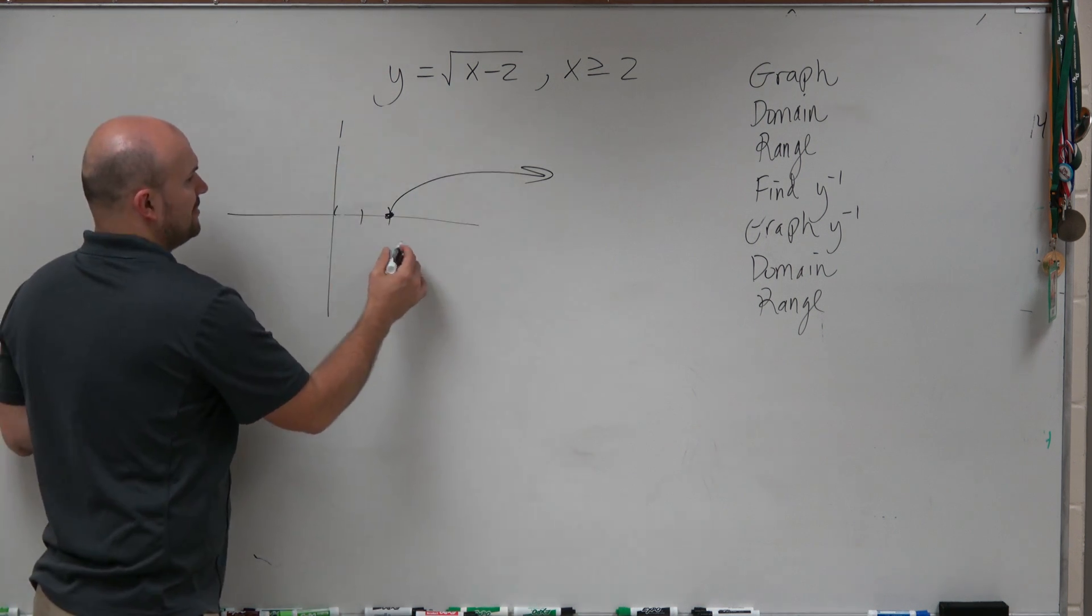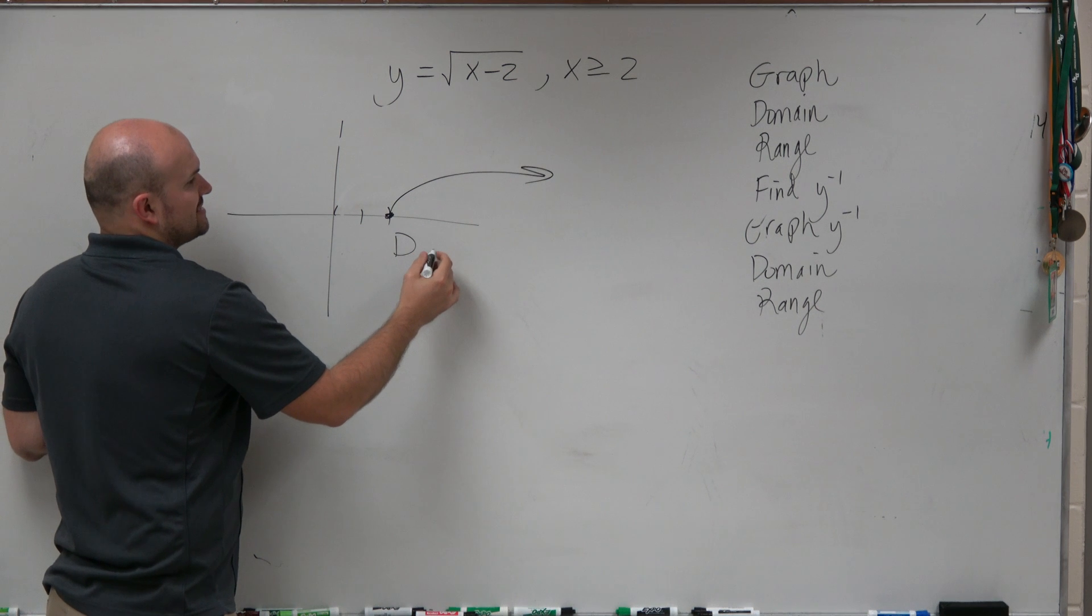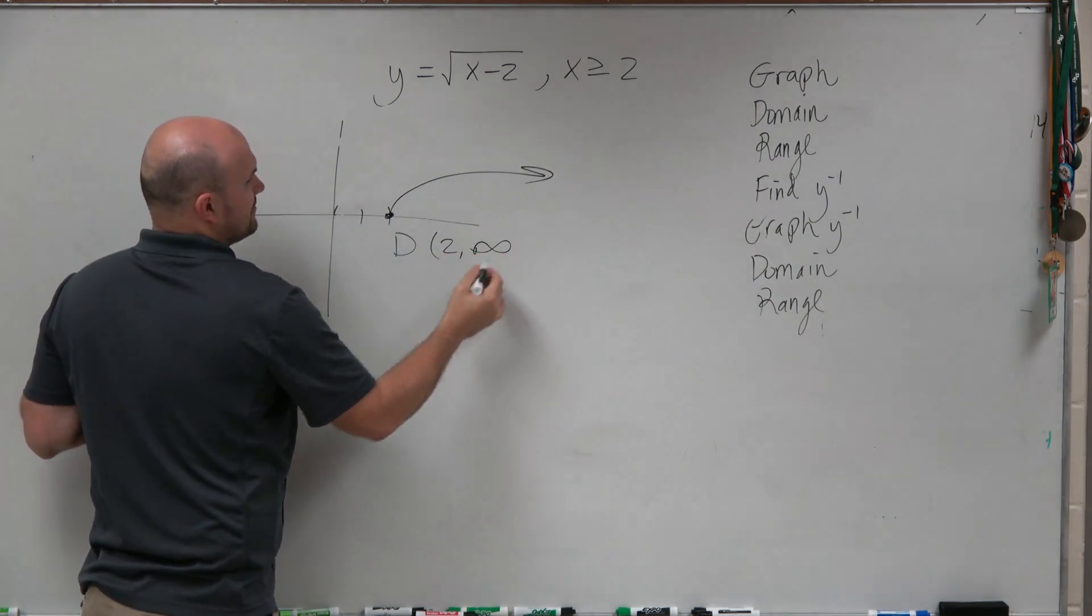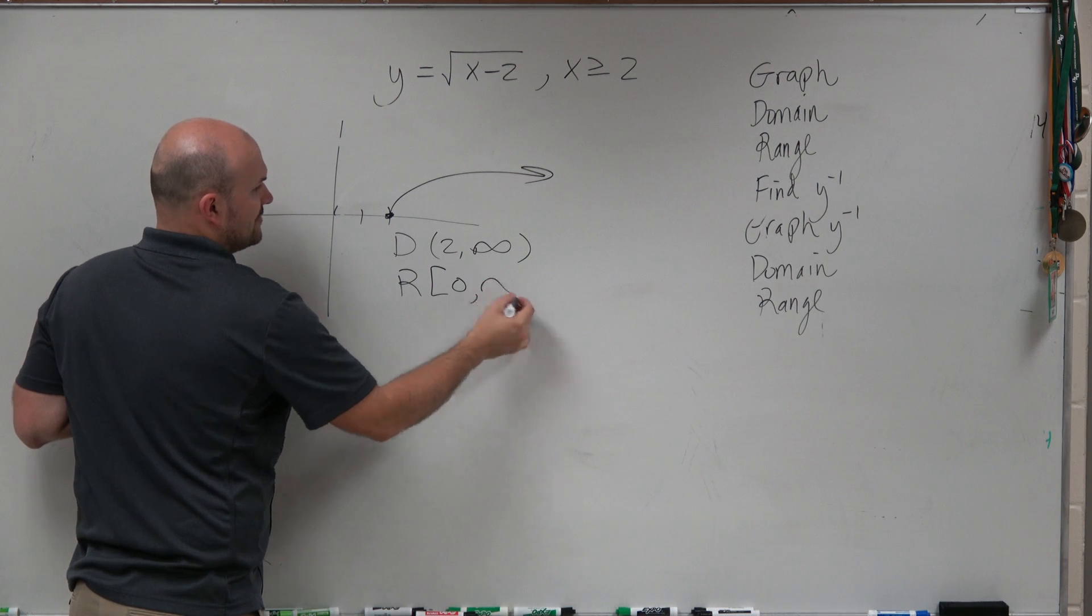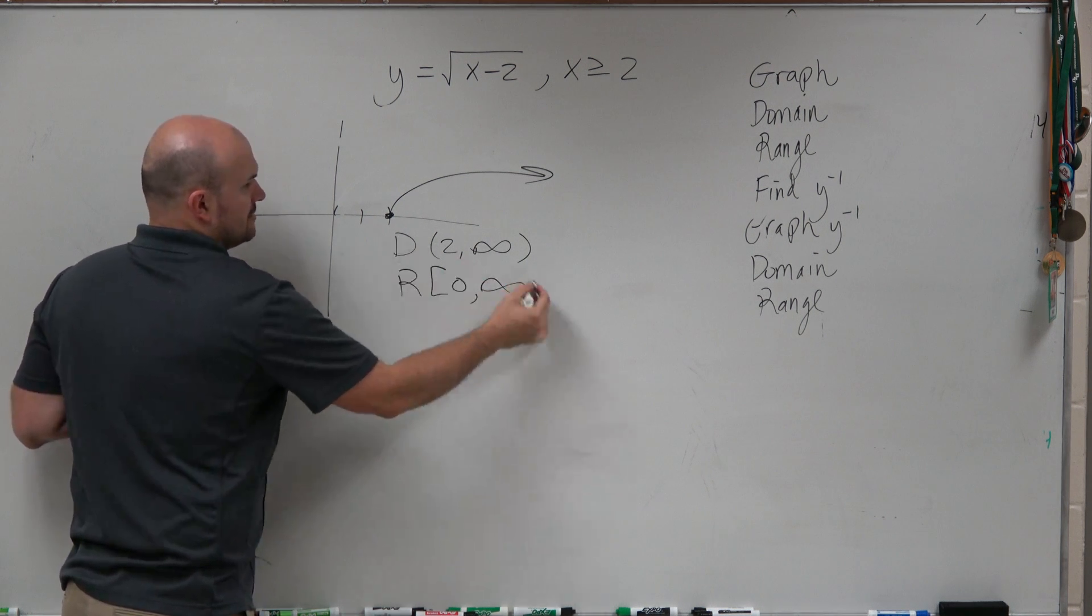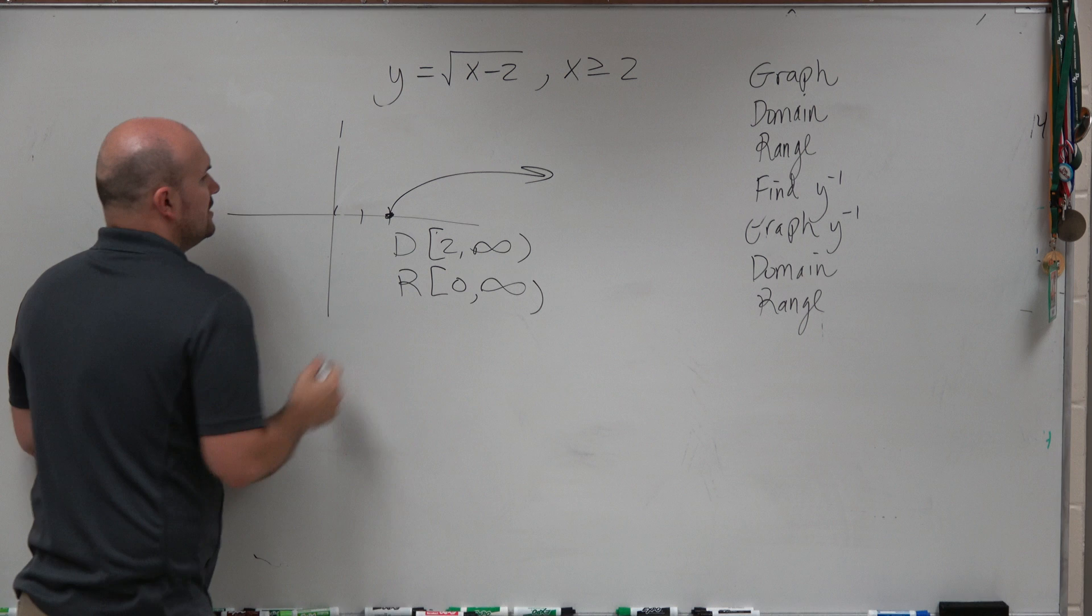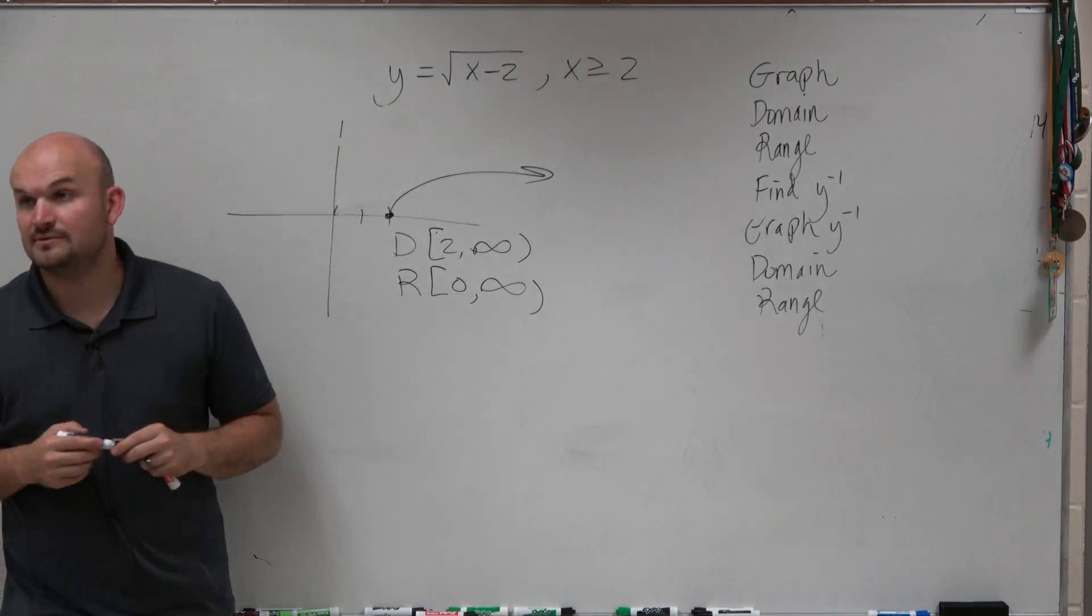The domain of this example is going to be from 2 to infinity, and the range is going to be from 0 to infinity. Yeah, that's a bracket too. 2 to infinity and 0 to infinity, OK?